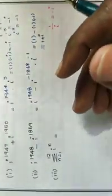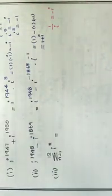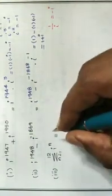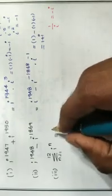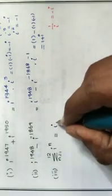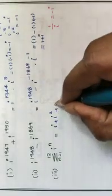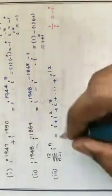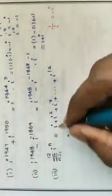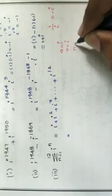Third problem: sigma n equals 1 to 12 of i to the power n. This is i plus i squared plus i cubed plus ... plus i to the power 12. It forms a geometric progression (GP) where a equals i, r equals i, and n equals 12.